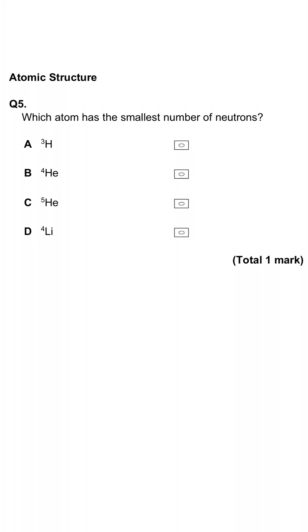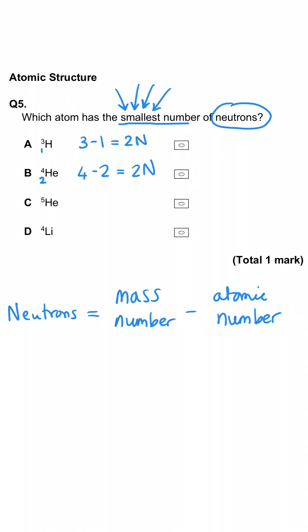This question is about subatomic particles, specifically neutrons. We're asked which of these atoms has the smallest number of neutrons. Well, you work out neutrons by doing mass number minus the atomic number. Hydrogen has an atomic number of one, so three take away one gives A two neutrons. Helium has an atomic number of two, so for B we do four take away two, which is again, two neutrons. C has a heavier isotope of helium, which has still got the atomic number of two. So five take away two gives us three neutrons this time, and for D, lithium has an atomic number of three, so four take away three gives us one neutron. Which means that D is the correct answer, because D has the smallest number of neutrons.